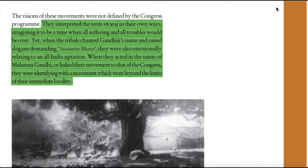The vision of these movements were not defined by the Congress program. They interpreted the term Swaraj in their own ways, imagining it to be a time when all suffering and all troubles would be over. Yet when the tribals chanted Gandhiji's name and raised slogans demanding Swatantra Bharat, they were also emotionally relating to an all-India agitation. When they acted in the name of Mahatma Gandhi or linked their movement to that of the Congress, they were identifying with a movement that went beyond the limits of their immediate locality.